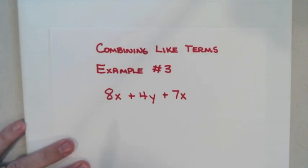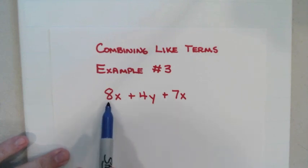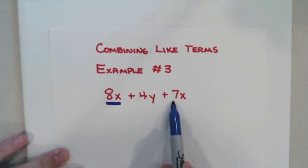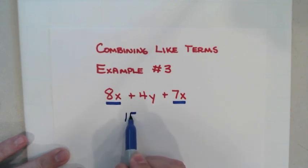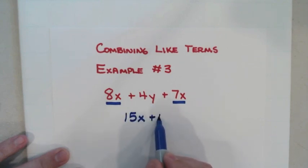Example number three. Again I have three terms. I'm combining the like terms, putting together the ones that go together. So I look at my terms. This one right here has an x and this one right here has an x. Those are the two that go together. I have 8 x's here, 7 x's here. Once I put them together I have a total of 15 x's. Then I bring this plus 4y because I can't combine it with the other ones and set it down right there.